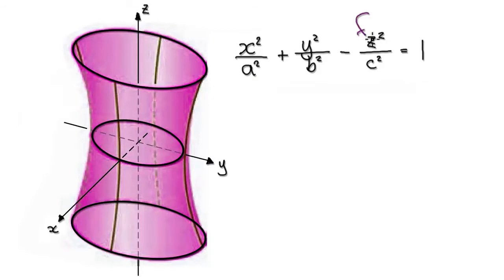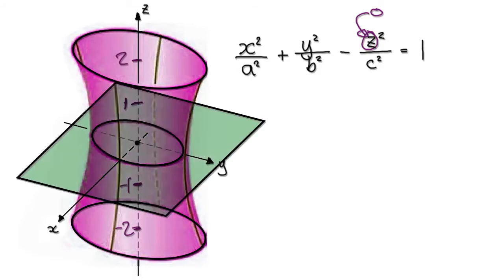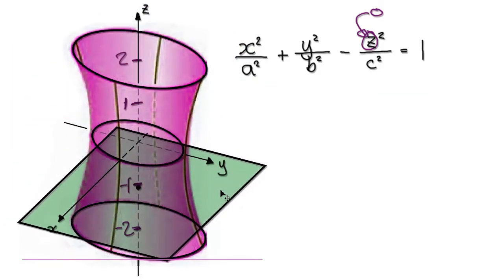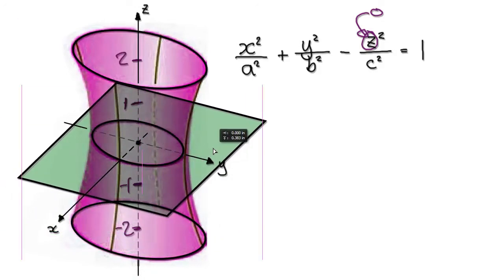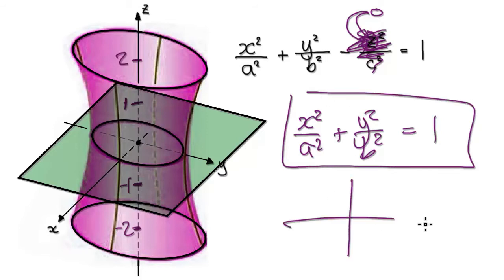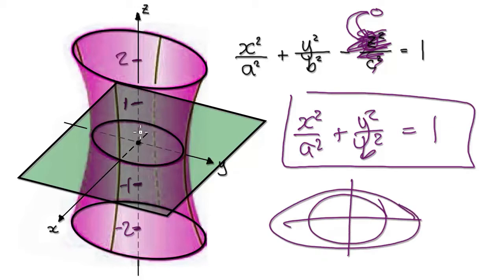Let's start by putting 0 into the z. Imagine the z direction has positive 1, positive 2, negative 1, negative 2. So when you put 0 into the z, you're looking at a horizontal sheet of paper at a height of 0. This whole z term will disappear, giving you x squared over a squared plus y squared over b squared equals 1. The minute you see this, you should be able to picture this graph — you're going to get a circle or ellipse, depending on your constants.